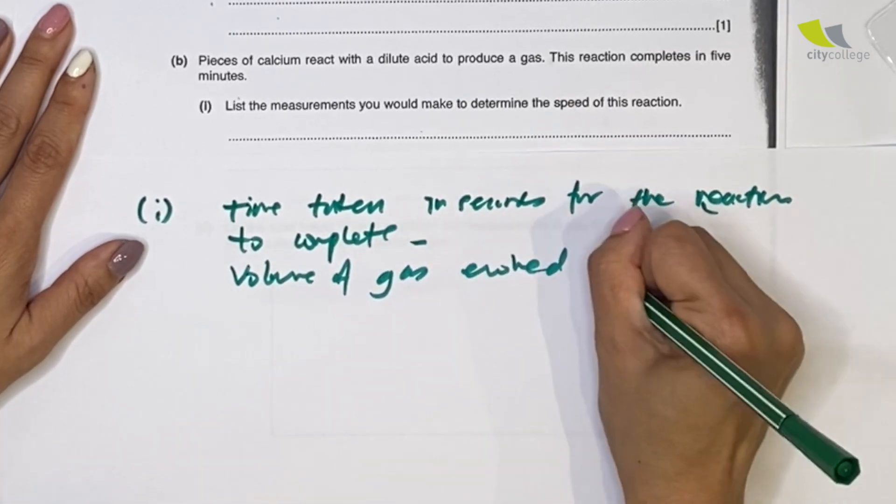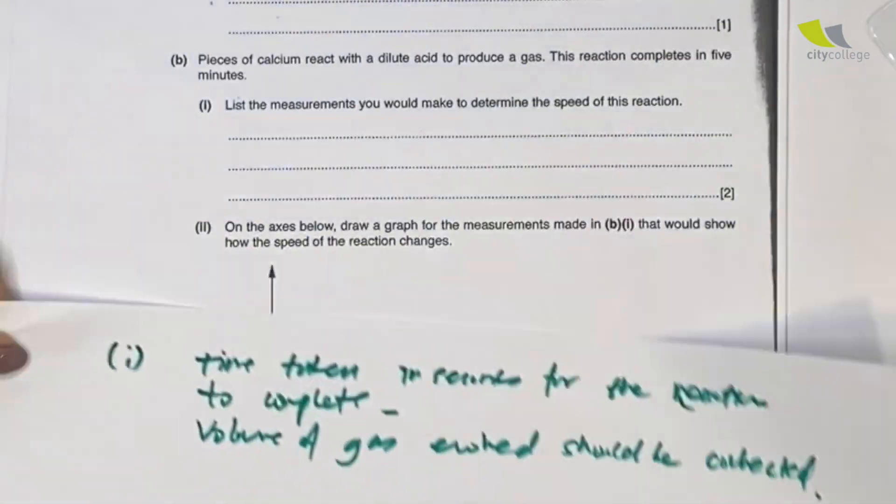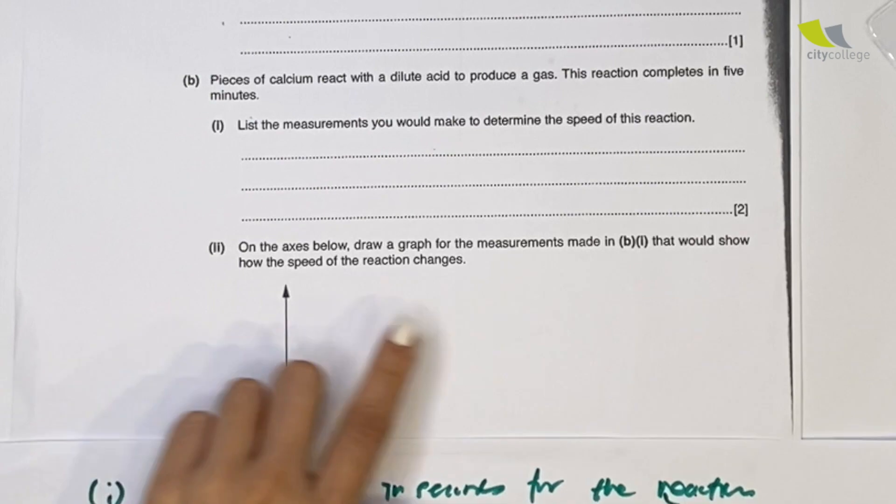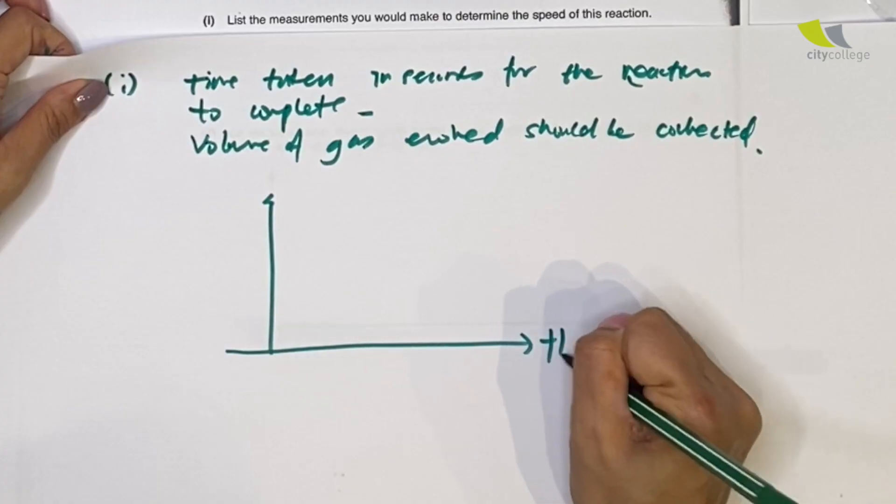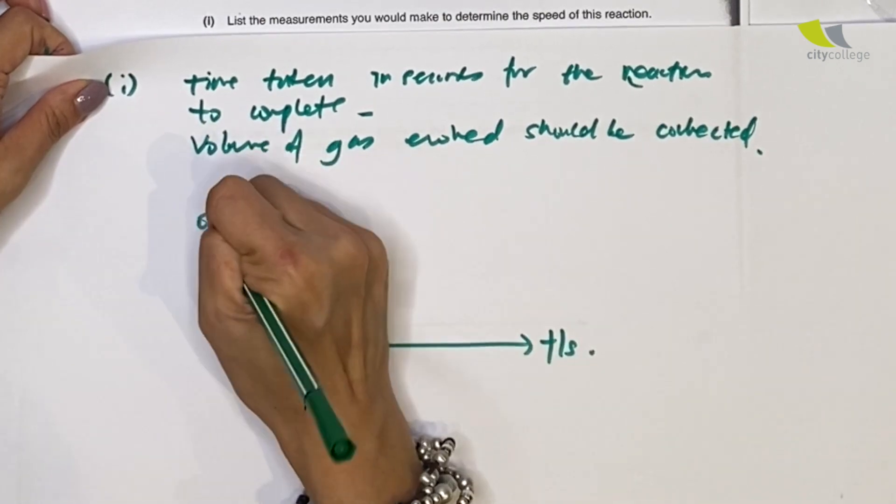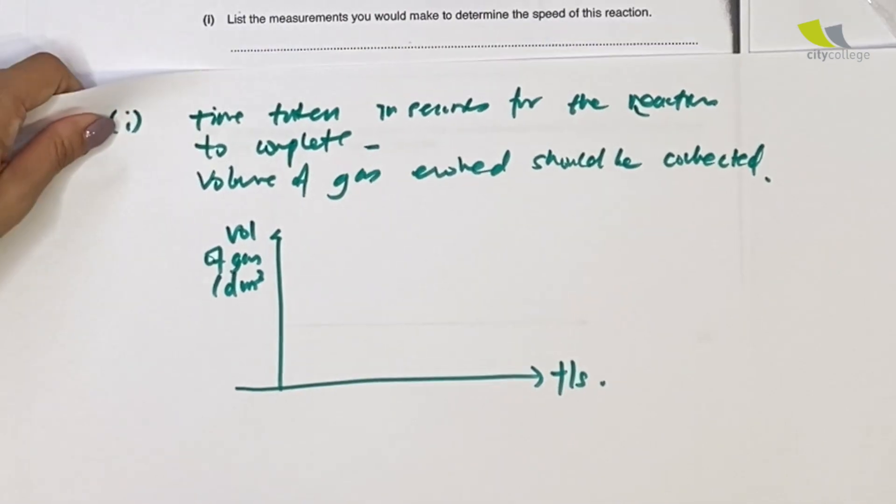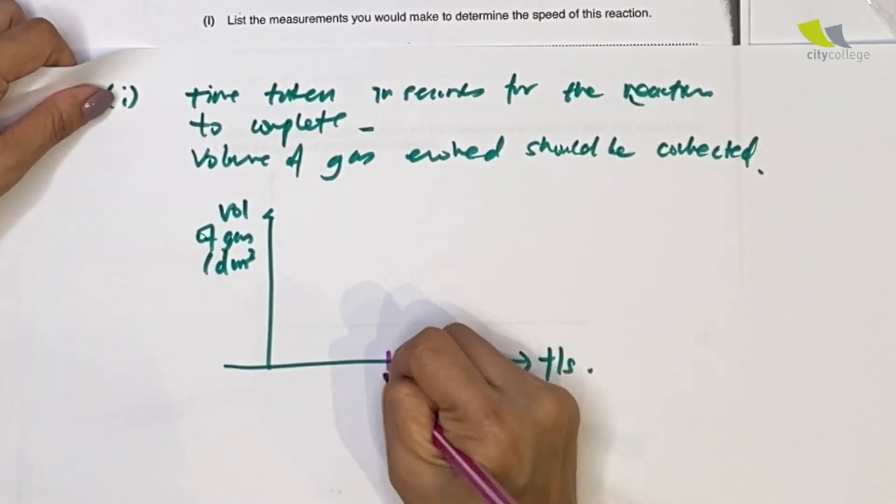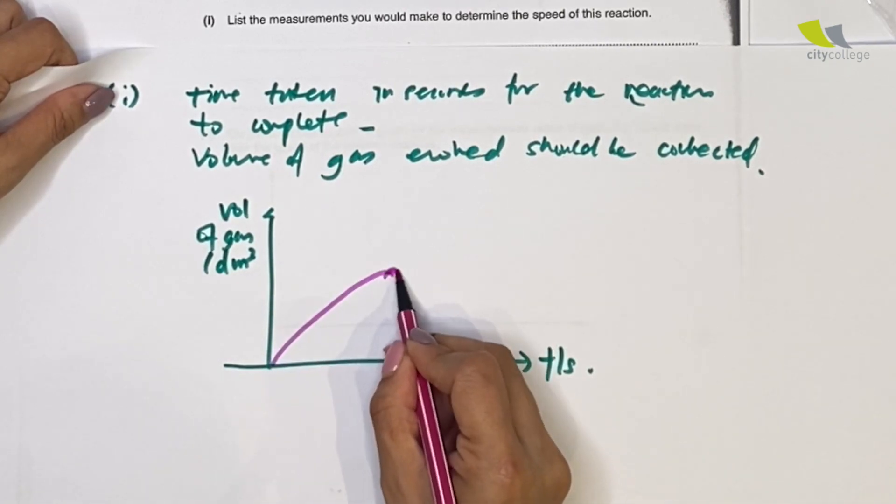Next up over here, they ask you on the axes to draw a graph on what I've just mentioned. So I will draw a graph: t per second, volume of gas - gas is always measured in dm³. And because the question here says that it was completed in five minutes, five here, go up flat. Completed.